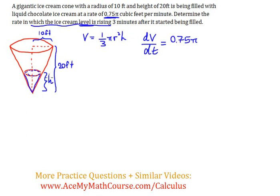I'm going to make a variable here, h, which is just the height of, essentially, the ice cream inside the ice cream cone. So what we're interested in determining is dh dt. That is the big question mark here.